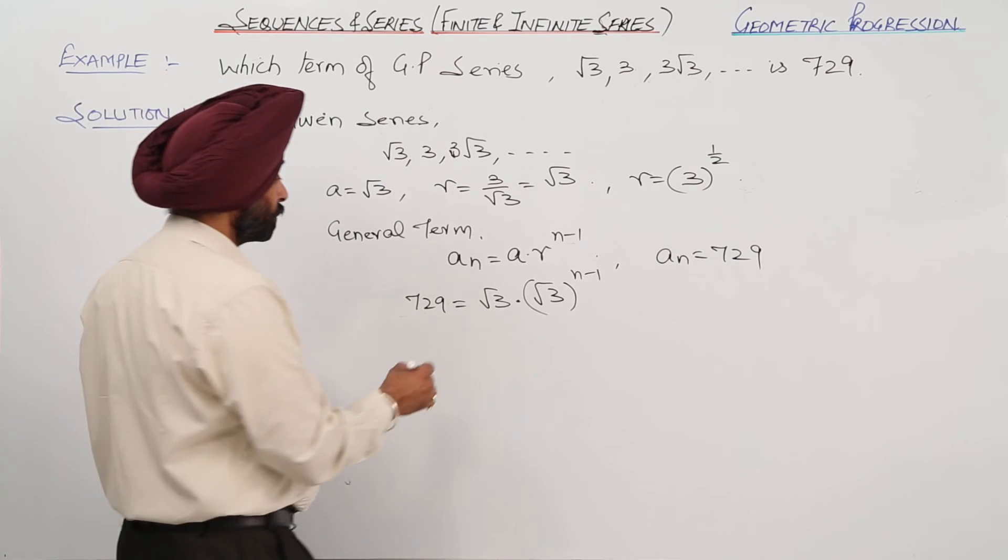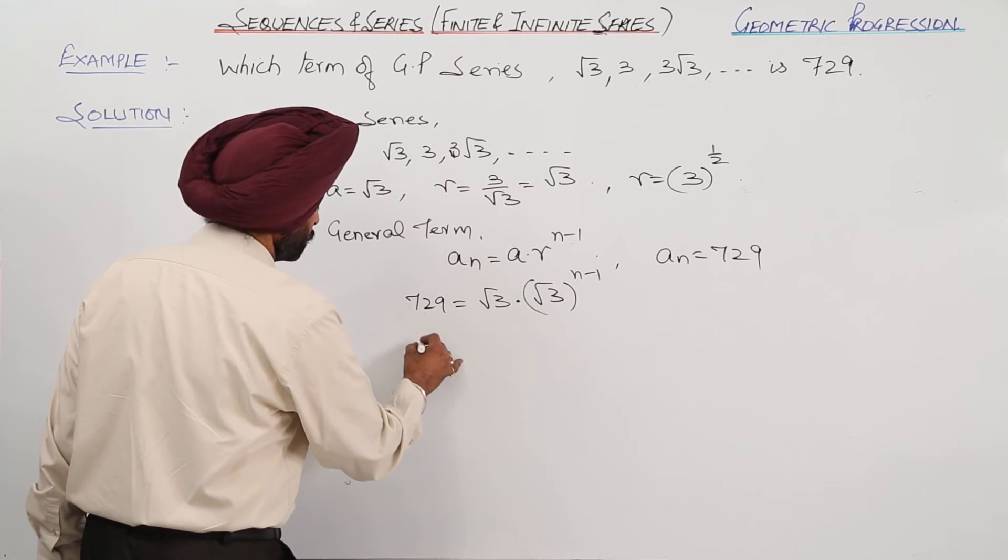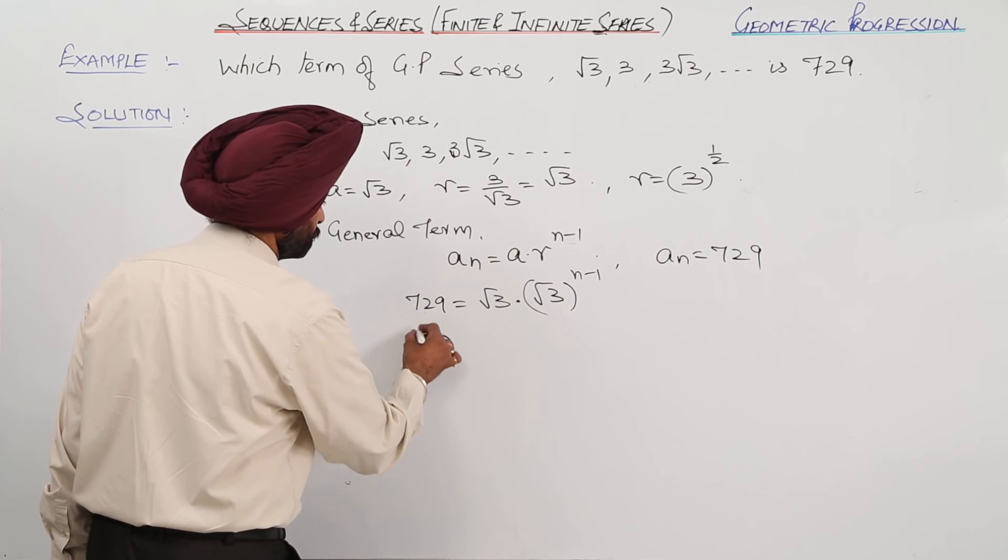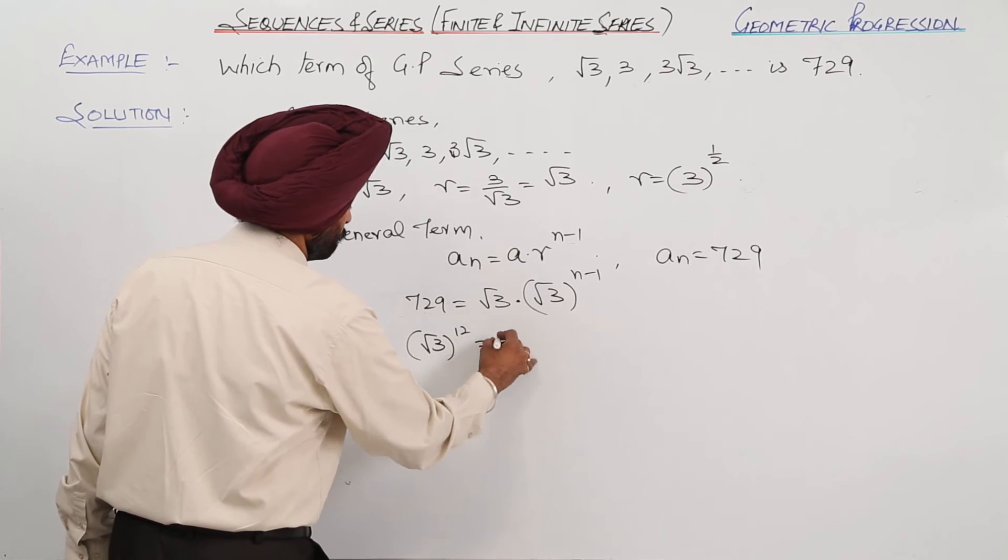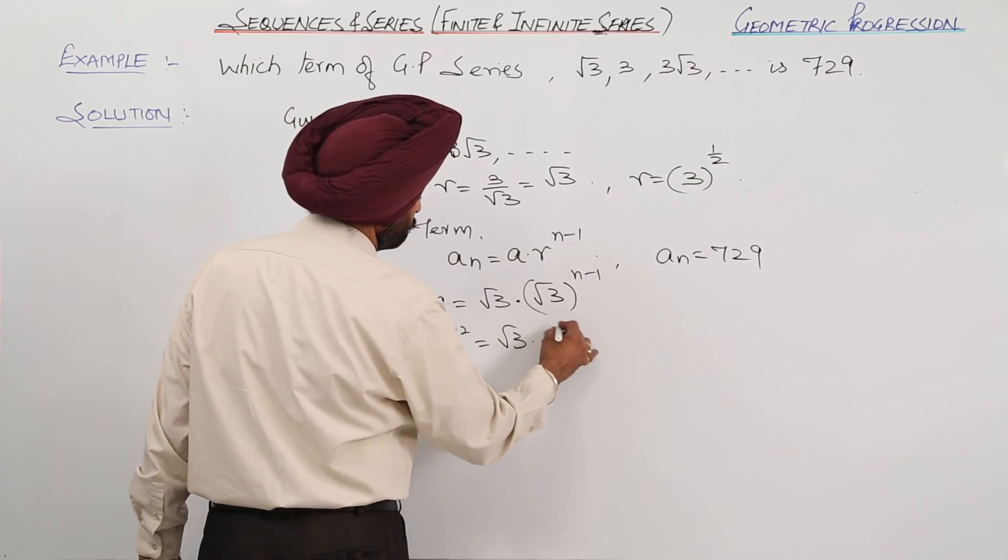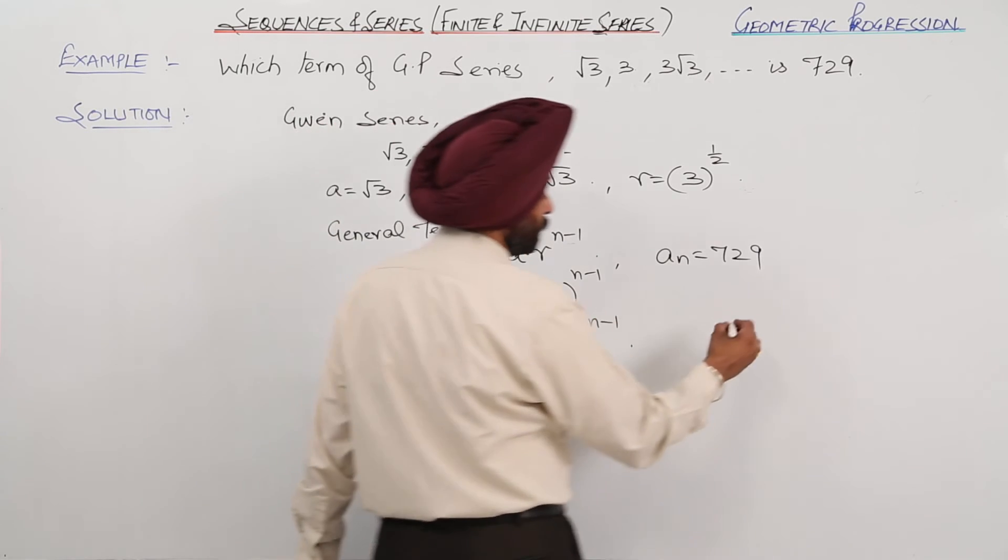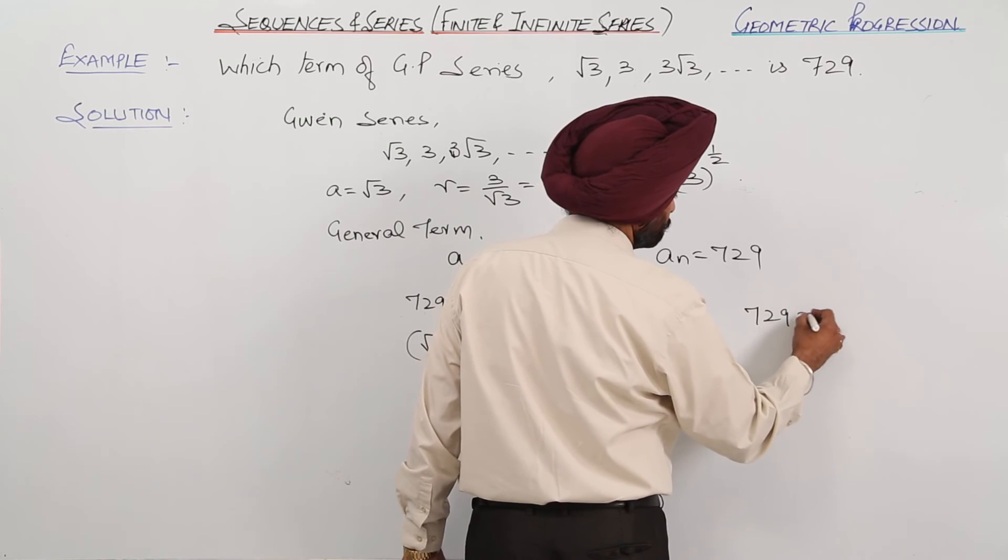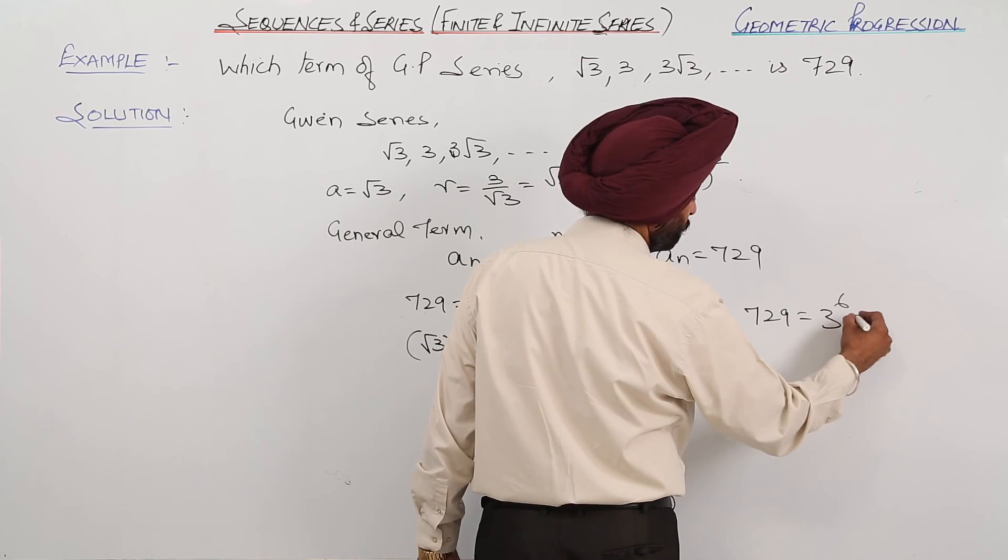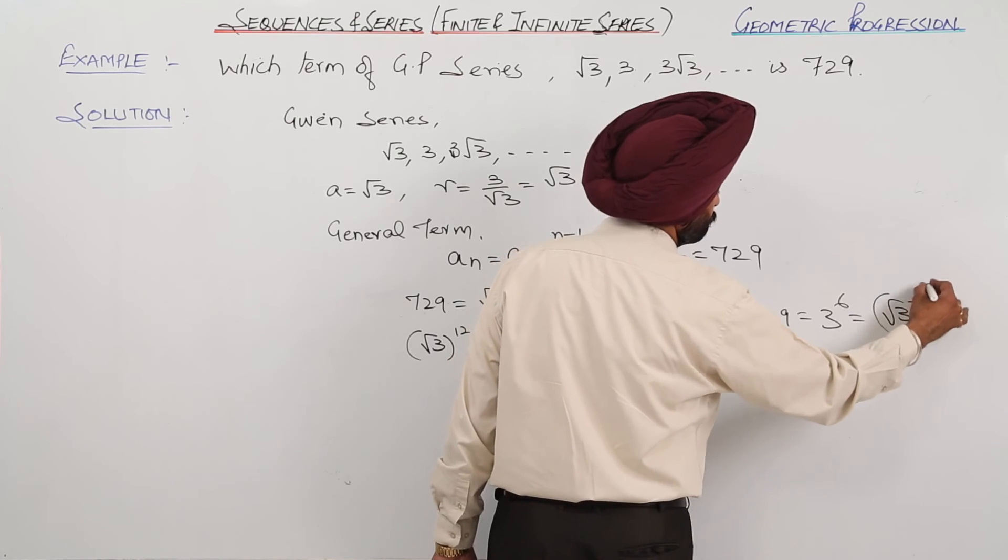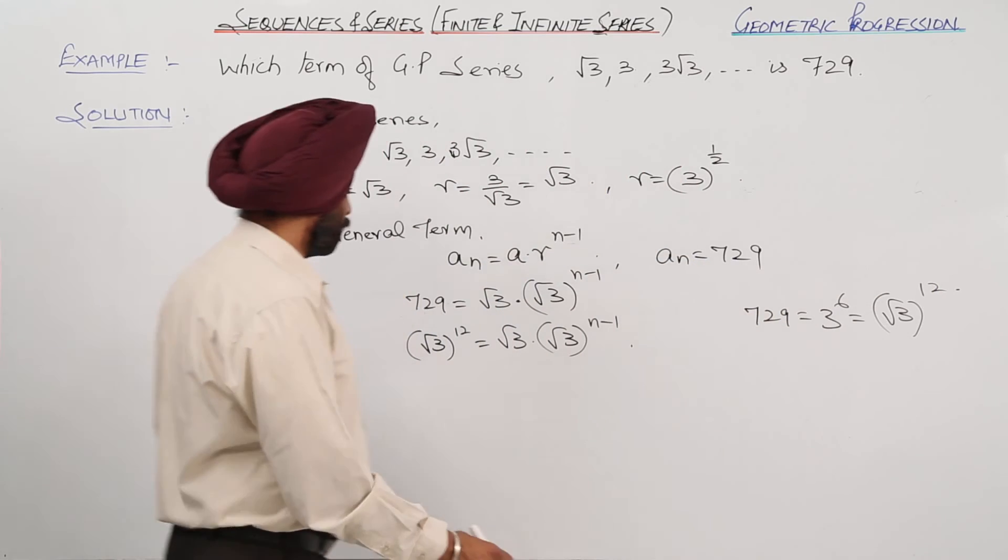729, what can we write it? 729 equals root 3 times root 3 raised to power n minus 1. Now, 729 is 3 raised to power 6, or we can write it as root 3 raised to power 12.